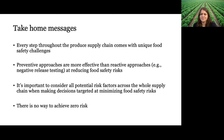Another take-home message is that it's important to consider all potential risk factors across the entire produce supply chain when making decisions targeted at minimizing food safety risks. This is especially important for produce where we don't have a kill step throughout production, because practices like how you irrigate your field can and will impact the safety of your finished product.